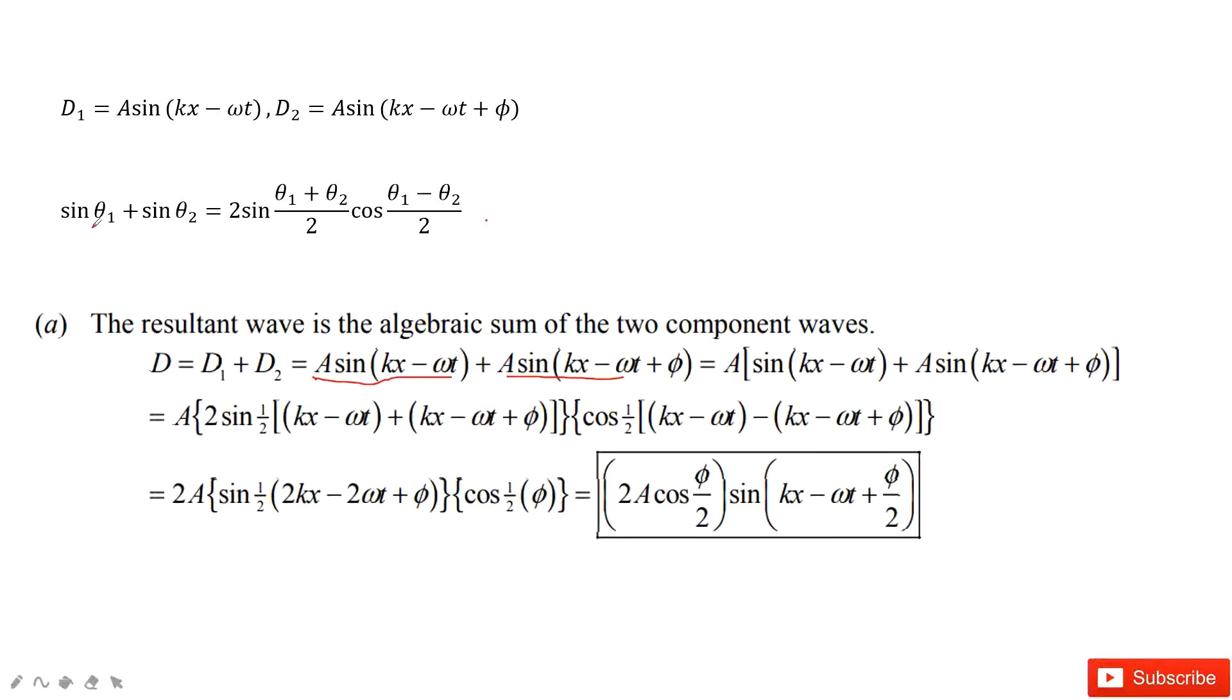You can see the hint is sin θ1 plus sin θ2, right? It's exactly as the sine. This part can be considered as θ1, this part as θ2. And take the A out. Now you can see this part can be written as this equation.